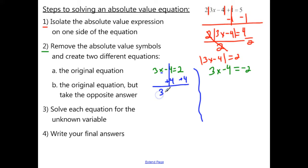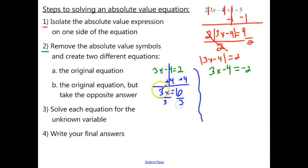Those cancel, and we're left with 3x equals 6. Then to isolate x, since it's 3 times x, we want to divide by 3 on both sides. Those cancel, and we're left with x equals 6 divided by 3, which is 2.